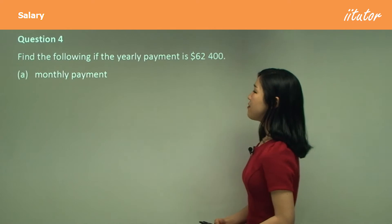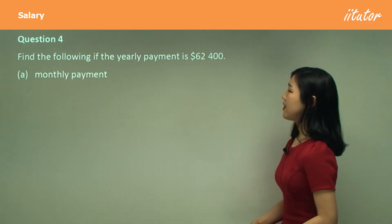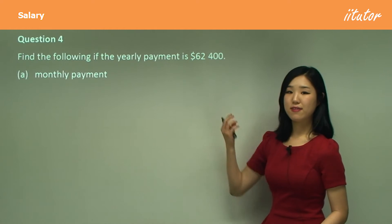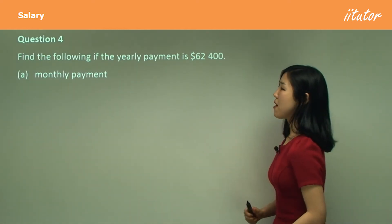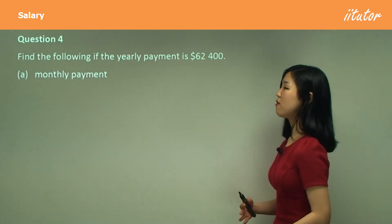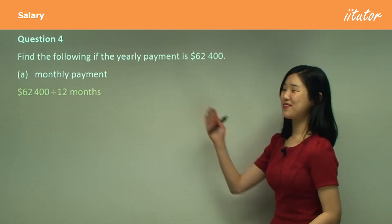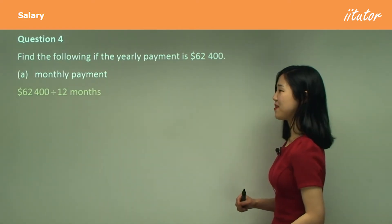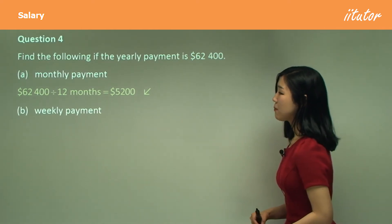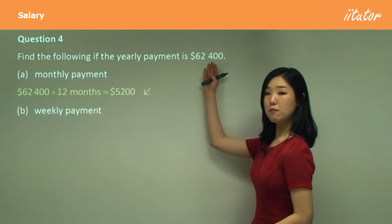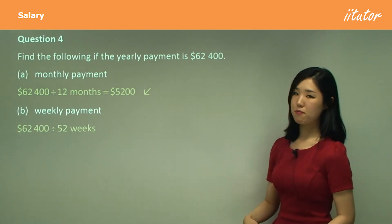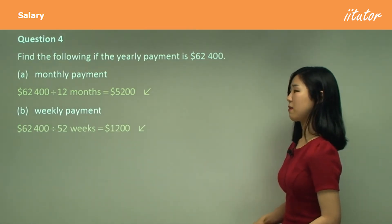Question four: find the following if the yearly payment is given. So that's your yearly payment, which is basically a salary. Now we want the monthly payment — there's 12 months in a year, so we simply divide it by 12. And that's your answer. Weekly payment — there's 52 weeks in a year, simply divide it by 52. That's your weekly payment.